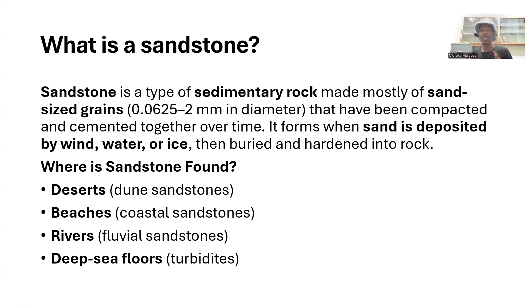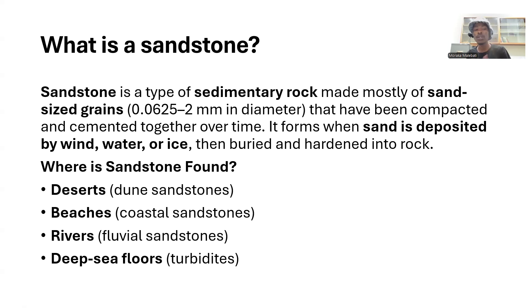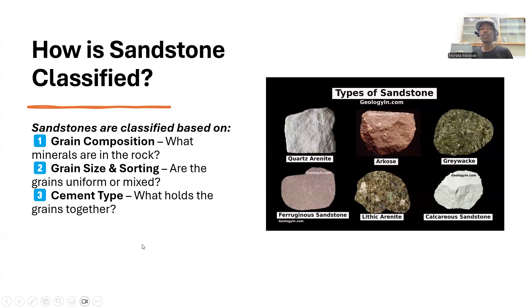Sandstones are found in aeolian environments — these are aeolian sandstones and are very fine-grained, because wind is only able to carry fine-grained materials. You can also find coastal sandstones and fluvial sandstones, which have a rougher texture, and deep-sea flow deposits called turbidites.